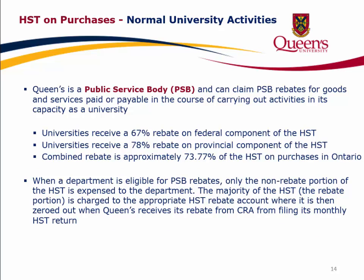Normal university activities. Queen's is a public service body (PSB) and can claim PSB rebates for goods and services paid or payable in the course of carrying out activities in its capacity as a university. Universities receive a 67% rebate on the federal component of the HST and a 78% rebate on the provincial component. Combined, the rebate is approximately 73.77% of the HST on purchases in Ontario. When a department is eligible for PSB rebates, only the non-rebate portion of the HST is expensed to the department; the rebate portion is charged to the appropriate HST rebate account.